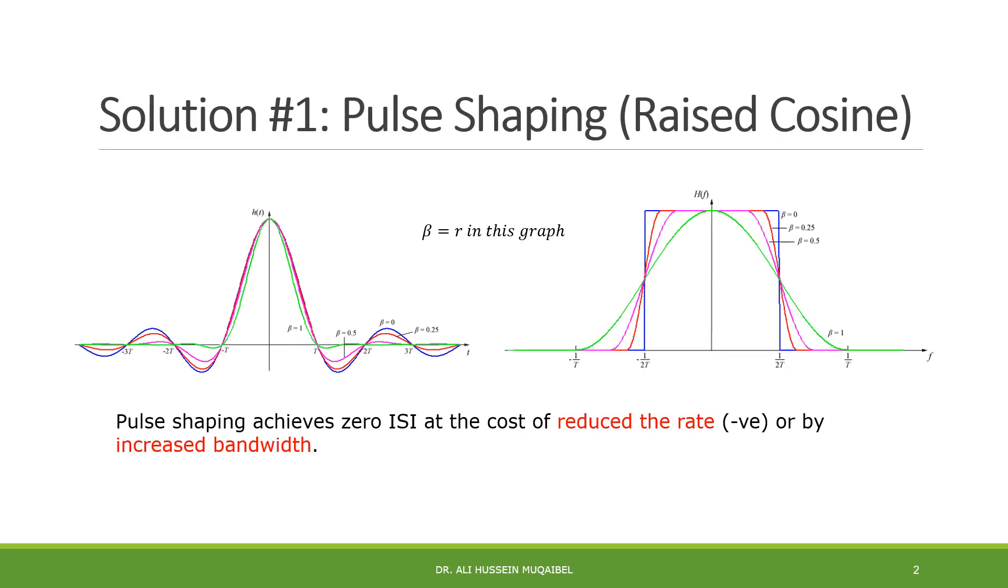Let us recall that the first solution for ISI or for inter-symbol interference was pulse shaping. We have shaped the pulse, like in the case of raised cosine, to get away with the inter-symbol interference. The price paid was the bandwidth. So we started with the sinc, and we said sinc has some impractical solutions. So we went from the sinc, the blue curve, into curves with less tail, and the price paid was the bandwidth. This price is very expensive. So pulse shaping achieves zero ISI at the cost of reduced data rate.